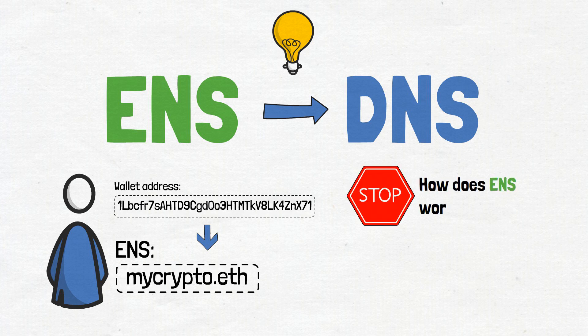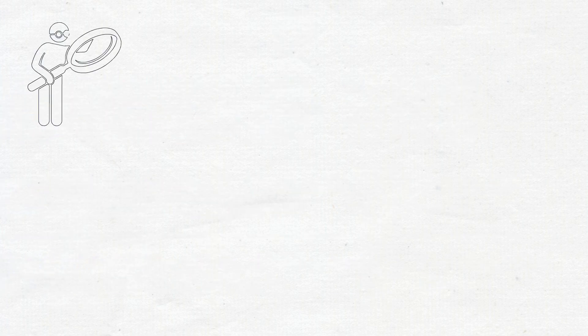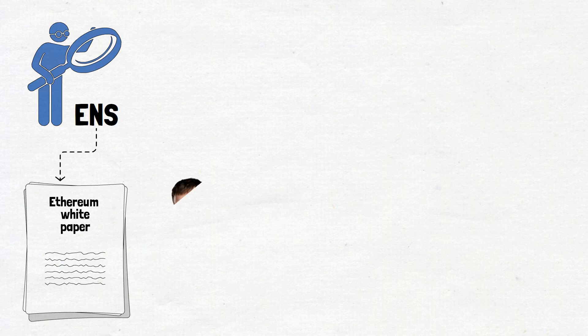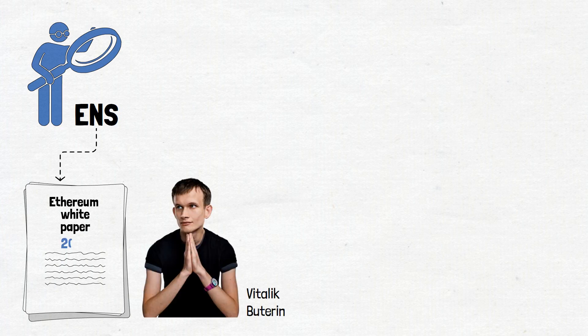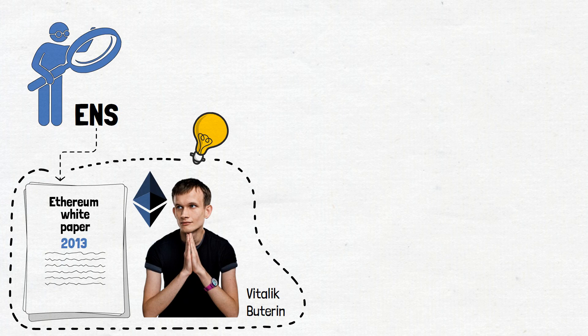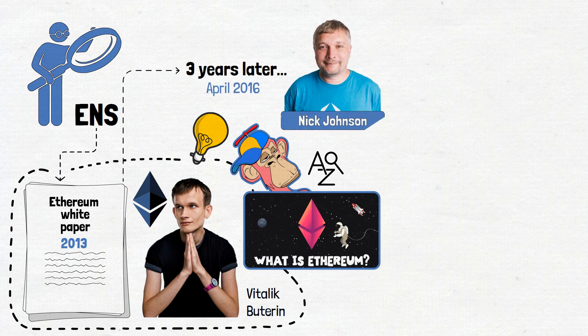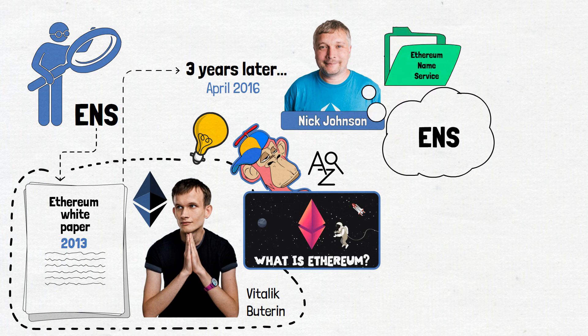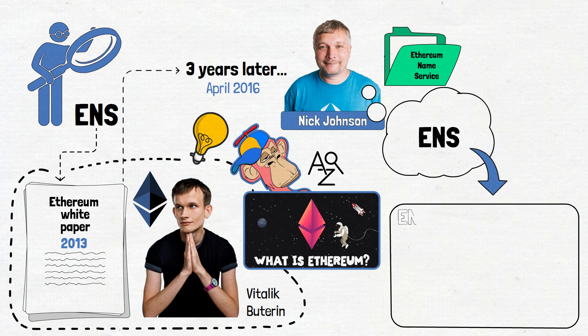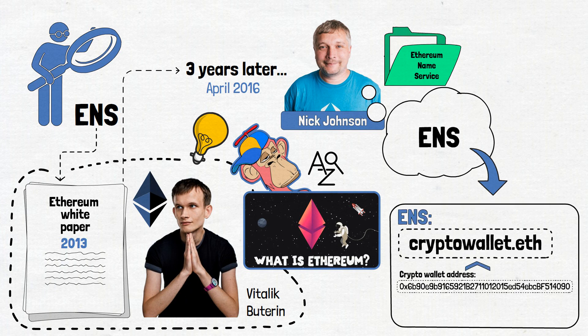Before we go into the specifics of how does ENS work, let's see what is the history behind Ethereum name service. The first signs of ENS can be traced back to the Ethereum white paper published by the network's co-founder Vitalik Buterin in 2013. If you want to know more about how Ethereum came to life, I have a dedicated video covering everything from A to Z when it comes to ETH. So, three years later, in April of 2016, Nick Johnson introduced a protocol that would eventually turn into what we now know as the Ethereum name service.